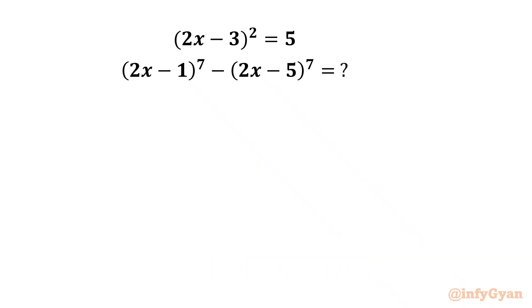We have (2x − 3)² = 5. Then we have to evaluate the expression (2x − 1)⁷ − (2x − 5)⁷.